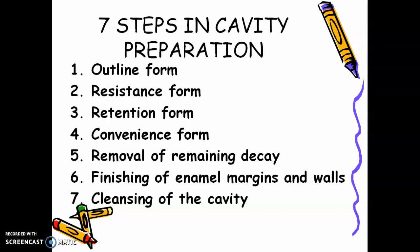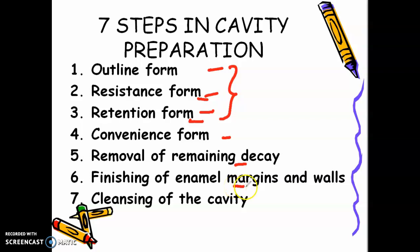Number one: outline form. Number two: resistance form. Number three: retention form. Outline, resistance, and retention form can be done in one procedure. Number four is convenience form. Number five: removal of remaining decay. Number six: finishing of enamel margins and walls. Number seven: cleansing of the cavity. These seven steps in cavity preparation are what we do in conventional cavity design. When you do conventional cavity design, whatever restorative material you choose for the patient, the tooth can stand on its own.